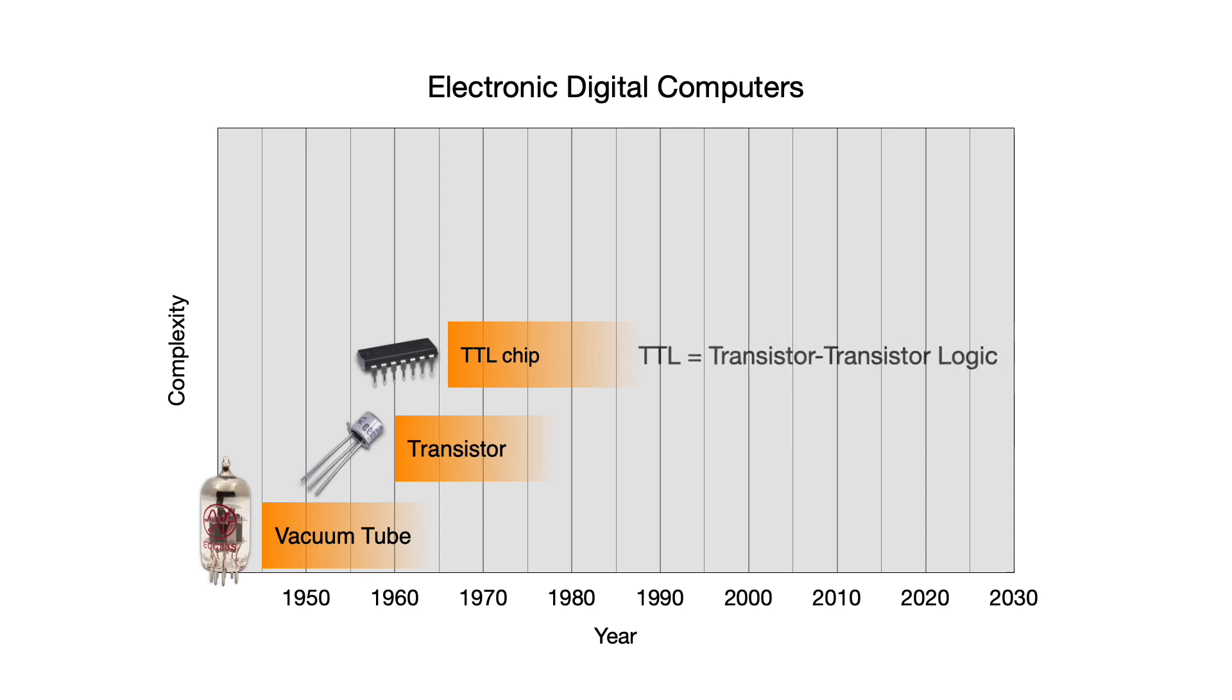TTL stands for Transistor-Transistor Logic, which is a way of connecting transistors to perform digital logic operations. TTL chips are primitive, with each chip containing only a few logic gates. Soon, microprocessor chips containing thousands of transistors appeared. Microprocessors did not eliminate TTL chips completely, as TTL chips were still used to provide the glue logic between the microprocessor and other components in the computer.